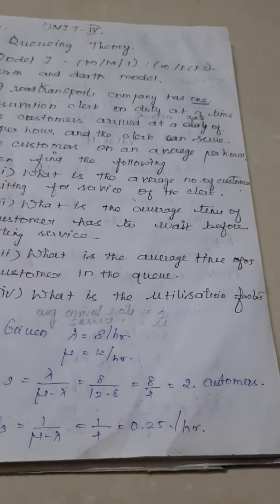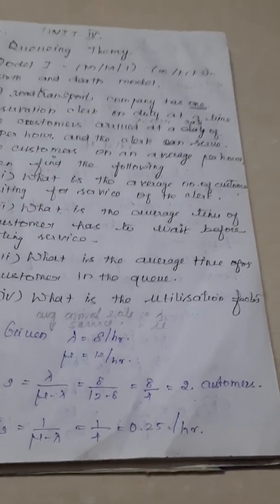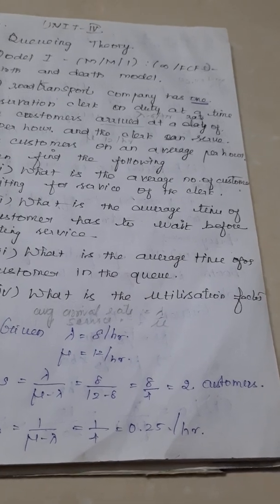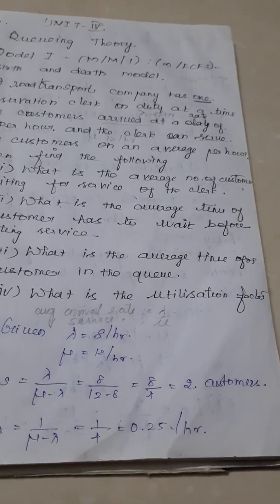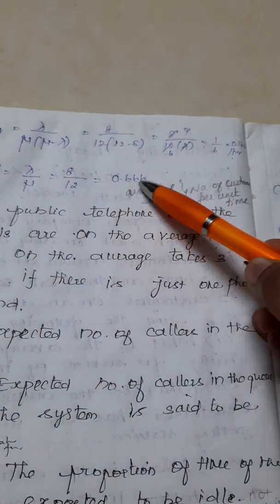So that is the probability of finding a system to be utilized. This is given by the formula rho equals lambda by mu. Substituting lambda and mu values, we get 0.66.